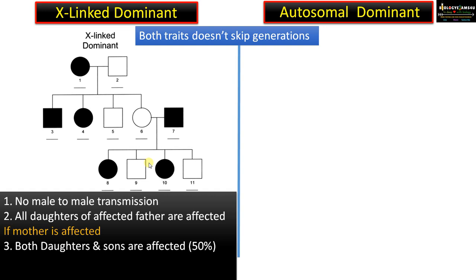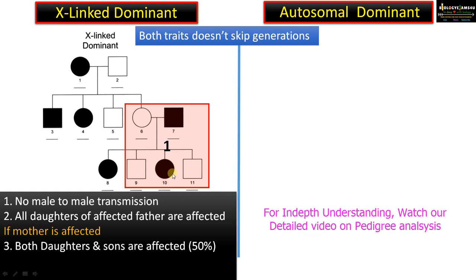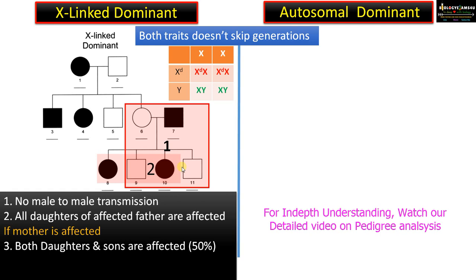Point number one: as you can see, this is the affected father — there is no male-to-male transmission. The offspring males are not affected. Point number two: all daughters are affected. If the father is affected, all daughters are affected. These are the two key points of X-linked dominant traits.